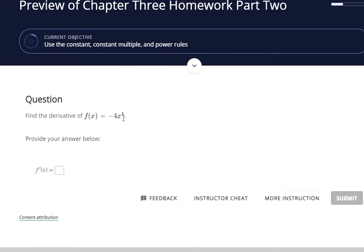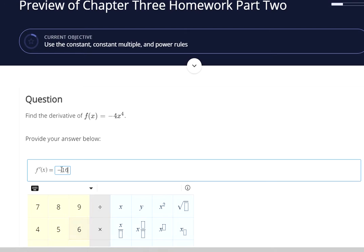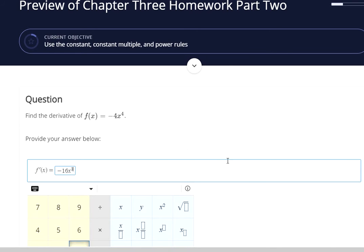This one's different. We can use the power rule. The four comes down and multiplies. And then the power gets reduced by one.